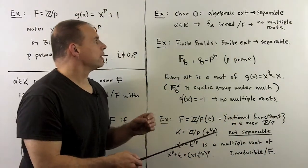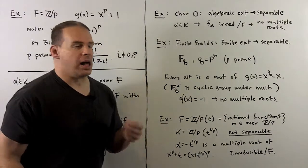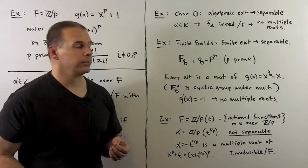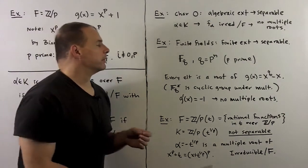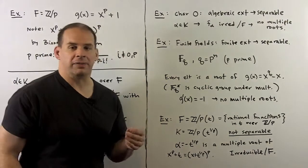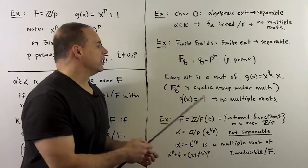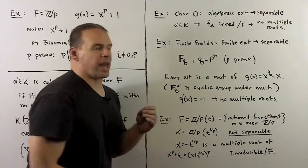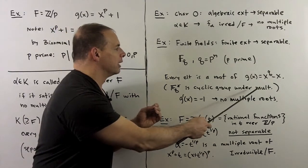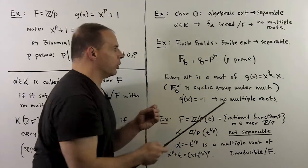For examples: in characteristic zero, every algebraic extension is separable. An alpha in k satisfies some minimal polynomial, which is irreducible over f, and in characteristic zero irreducible implies no multiple roots, so separable. In characteristic p, let's consider finite fields. Here we only consider finite extensions, so these are all separable. Taking F_q a finite field with q = p^n elements, we check if this is separable over Z/pZ. Every element of F_q is a root of g(x) = x^q − x, because the group of units in F_q forms a cyclic group under multiplication. Taking the derivative, q is a power of p, so we get −1, meaning there are no multiple roots — so separable.